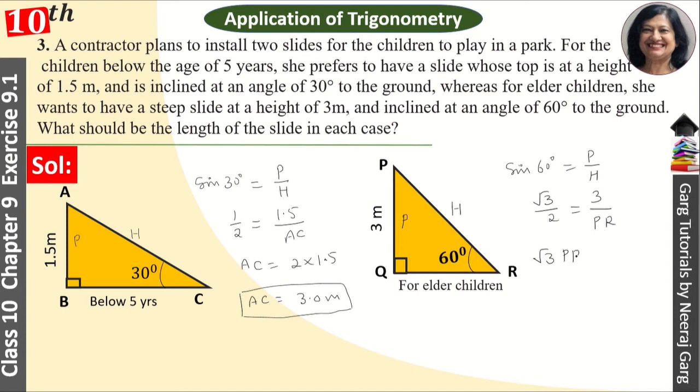And this we will rationalize, so we get 6 root 3 upon root 3 into root 3. This is 3. 3 and 3 cancel. Therefore PR is equal to 2 root 3 meter. This is our other slide length.